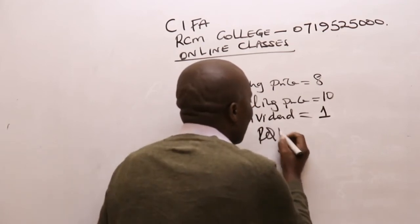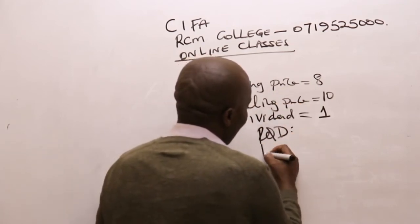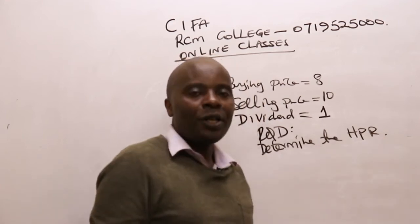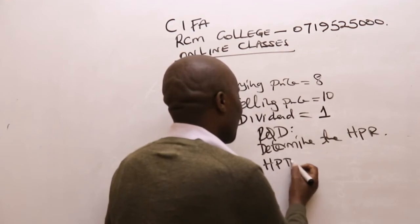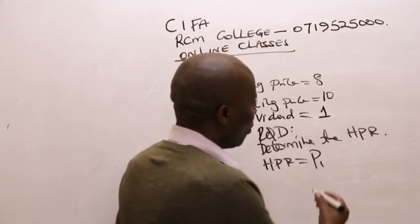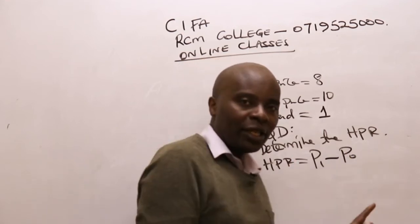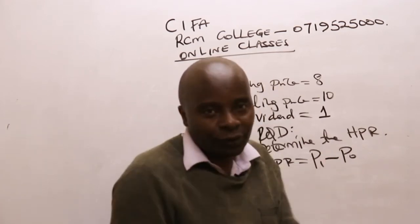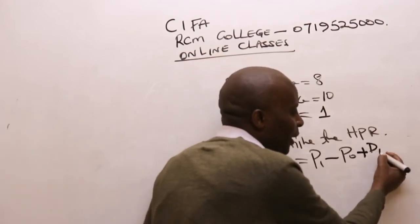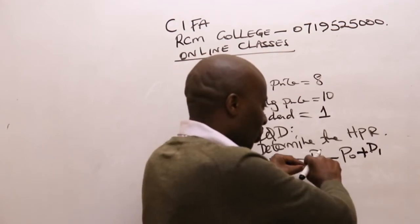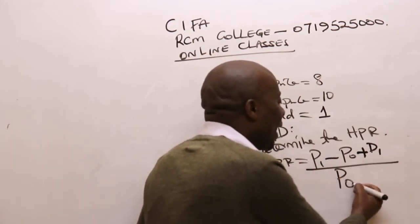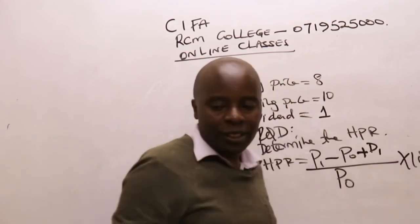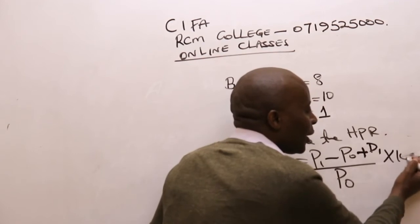And then you are required in exercise two to determine the holding period return. My holding period return will be equal to the price of the share at the end of year one minus the price of the share at the beginning — that gives me the capital gain. We also had a cash flow in the name of a dividend — dividend receivable at the end of year one. This gives us the total gain divided by our price at the beginning, the buying price, times 100.